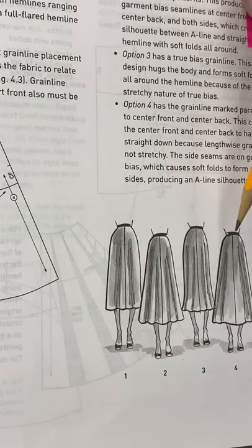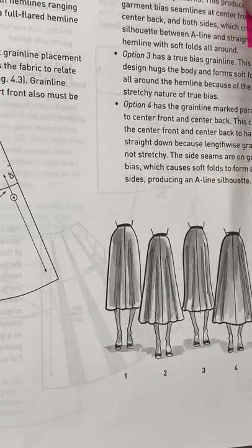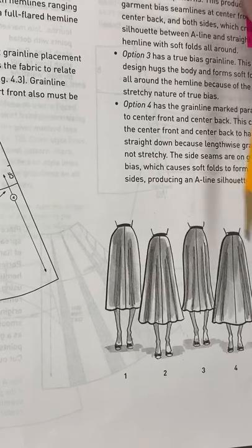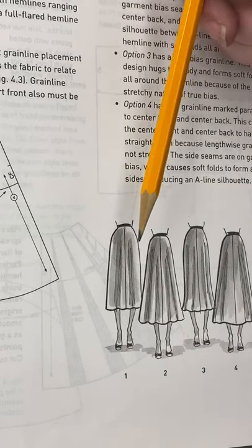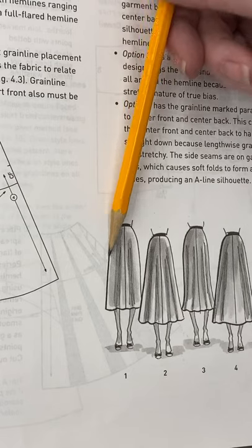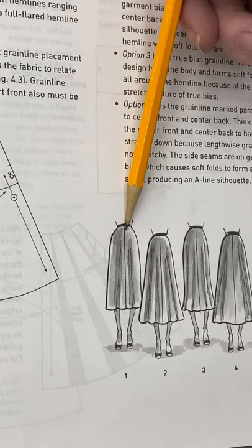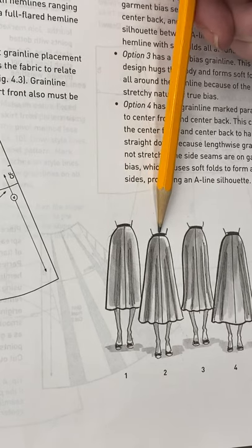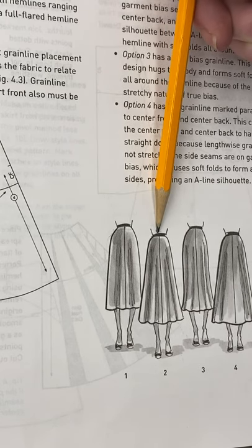So you need to think about that in your aesthetic before you put grain lines on your pieces. How do you want this grain line to be hanging? If your grain line is parallel to the side seam then it's going to hang like this. If your grain line is perpendicular to the floor it's going to look like this.